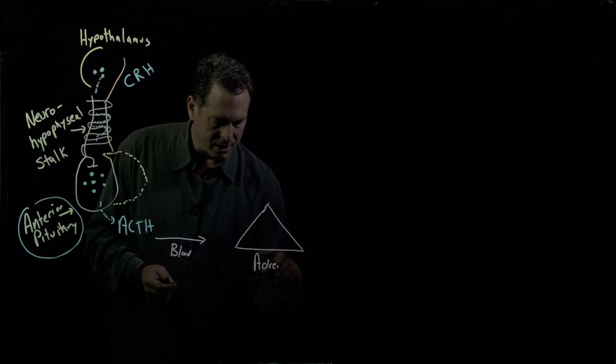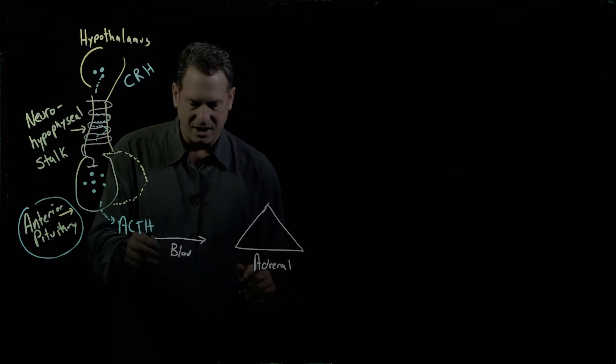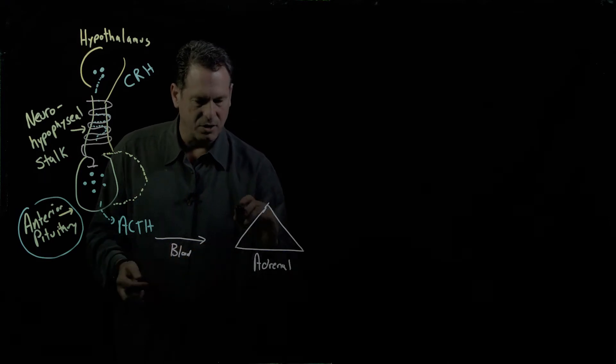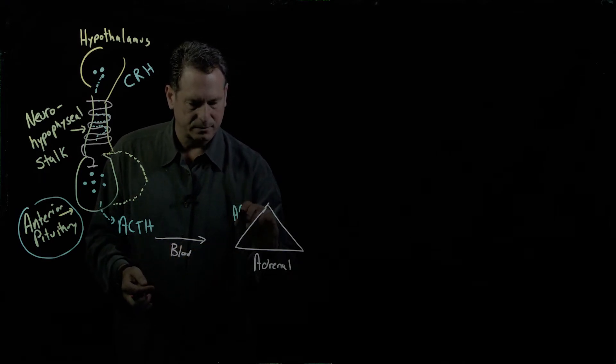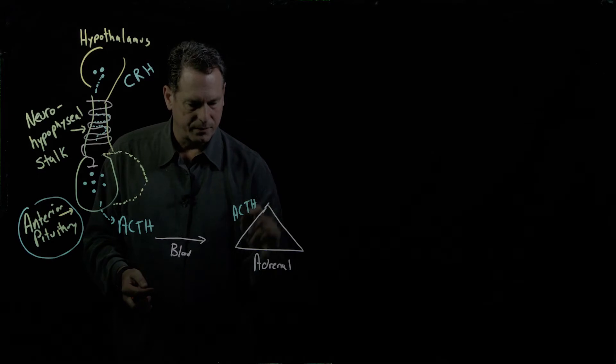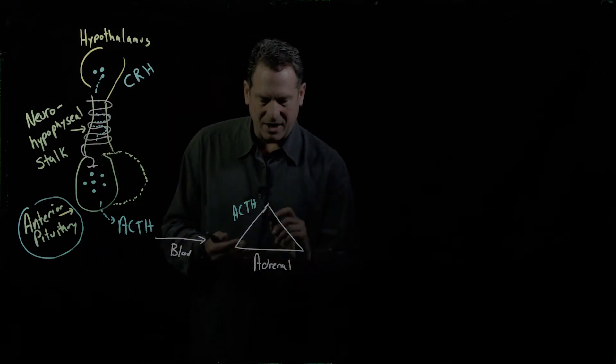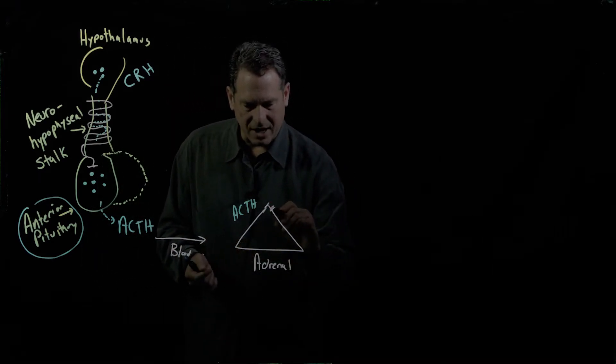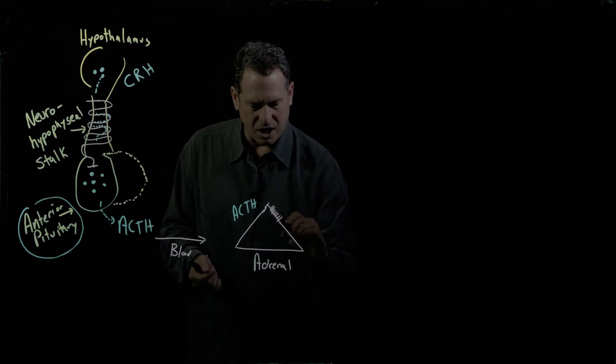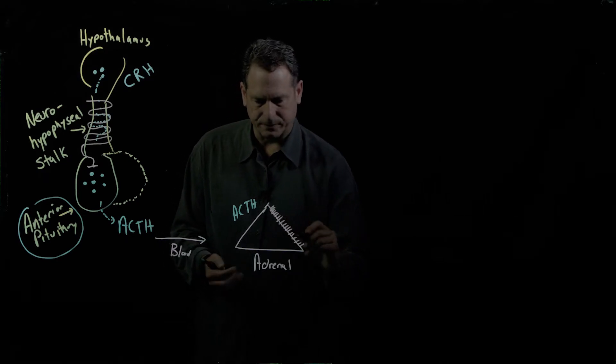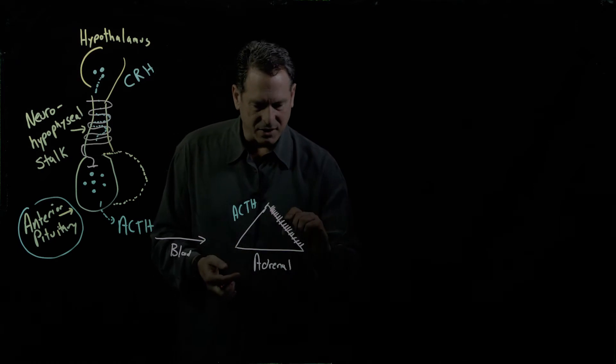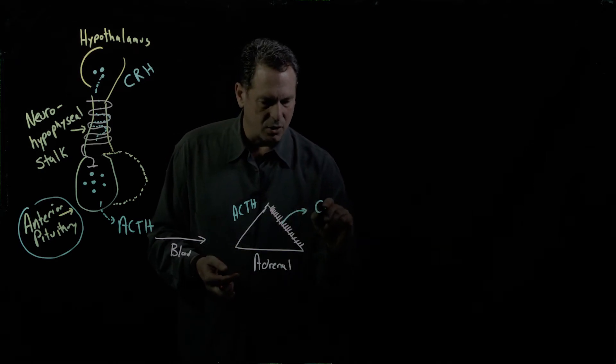Now when ACTH makes its way to the adrenal glands, it stimulates a specialized region on the outer shell of the adrenal gland, the cortex, to then synthesize cortisol.